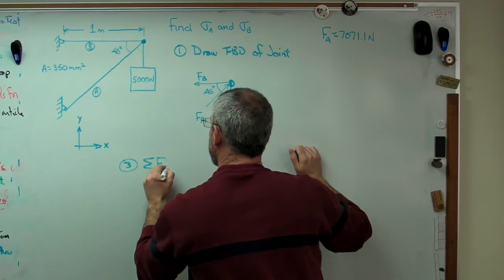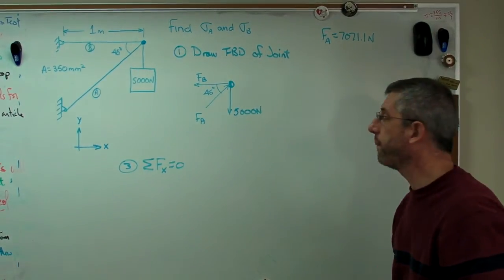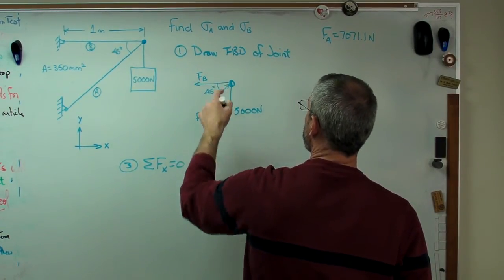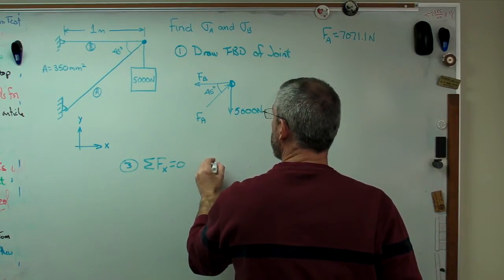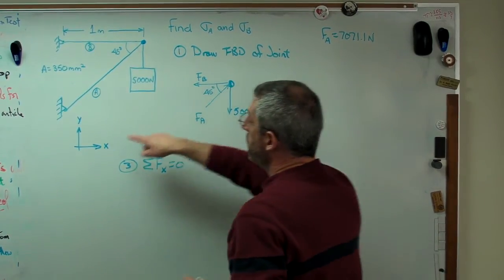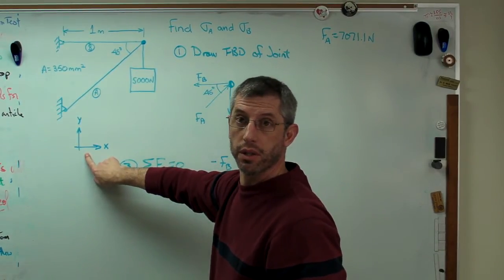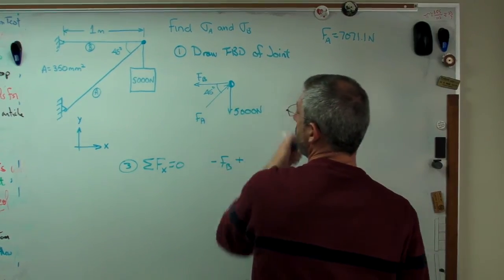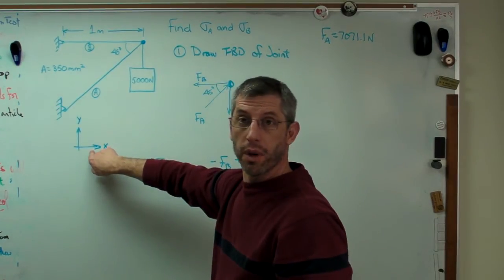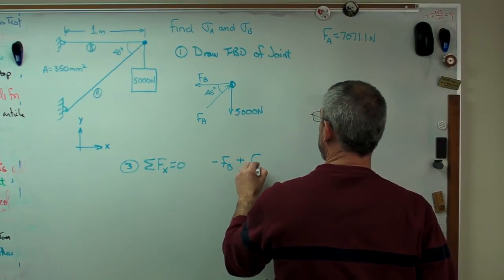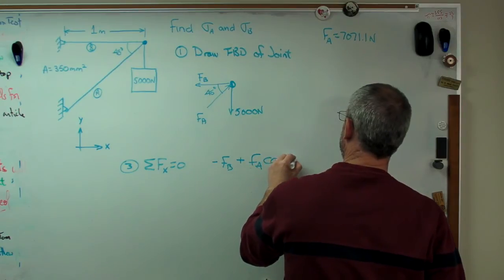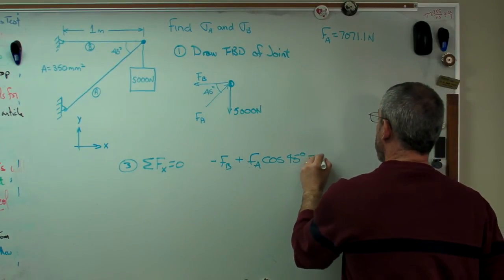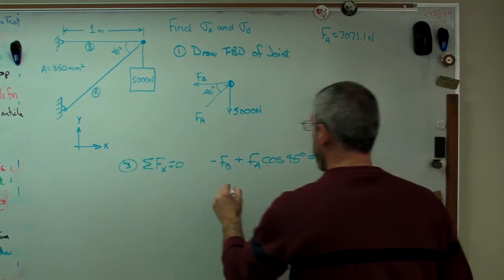And I'm going to leave the free body diagram there so we can refer to it. So step three is to sum the forces in the x direction. That also has to equal zero. So again, there's only two components here. So let's see, I have minus FB, minus because it's acting opposite my assumed positive horizontal direction. Plus, the horizontal component of FA is going to the right along with my assumed positive direction.